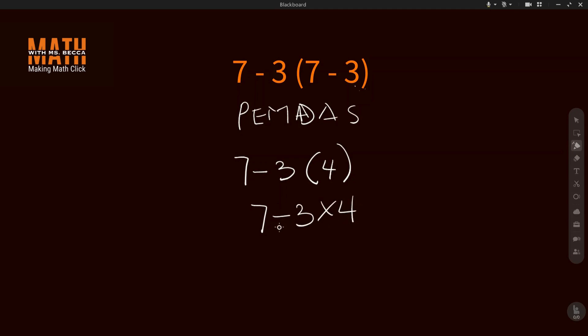Now that we have subtraction and multiplication, multiplication comes first and then subtraction comes second. So we'll be multiplying before we subtract. This will give 7 minus, 3 times 4 is 12.